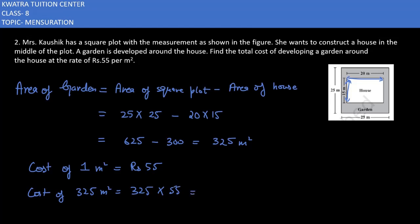So multiplying 325 and 55 will give you 17,875. So yes, this is the answer for question number two. Now we'll be moving to question number three.